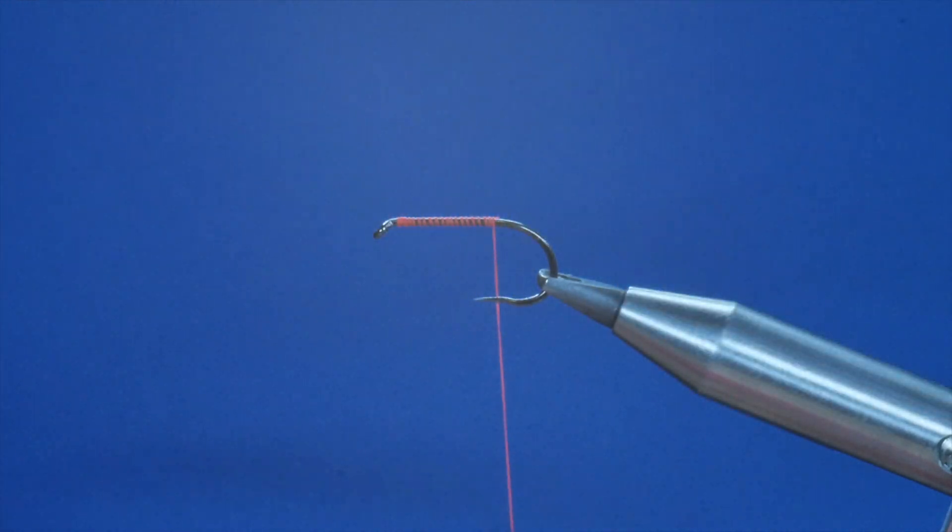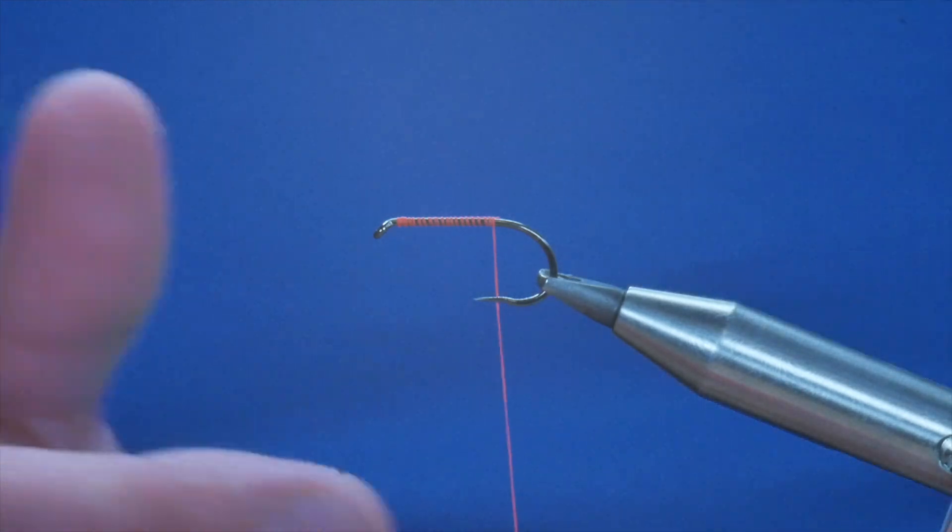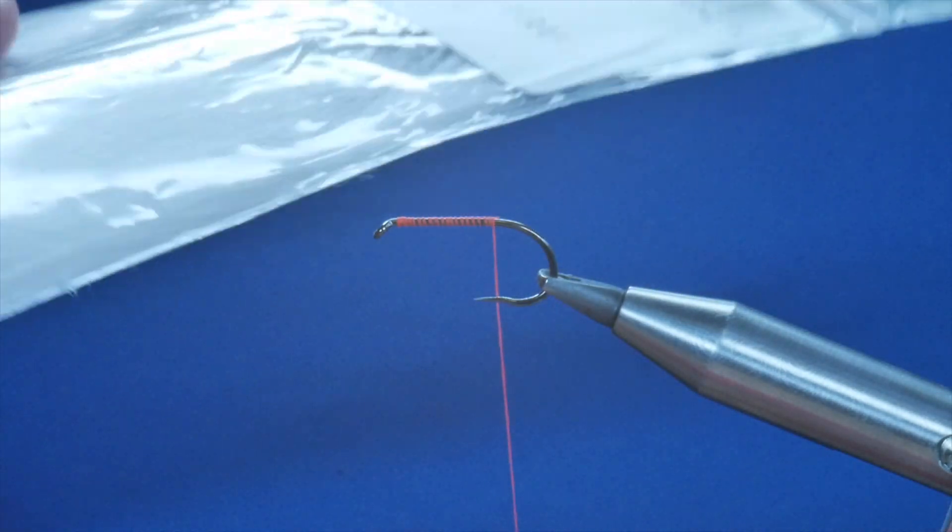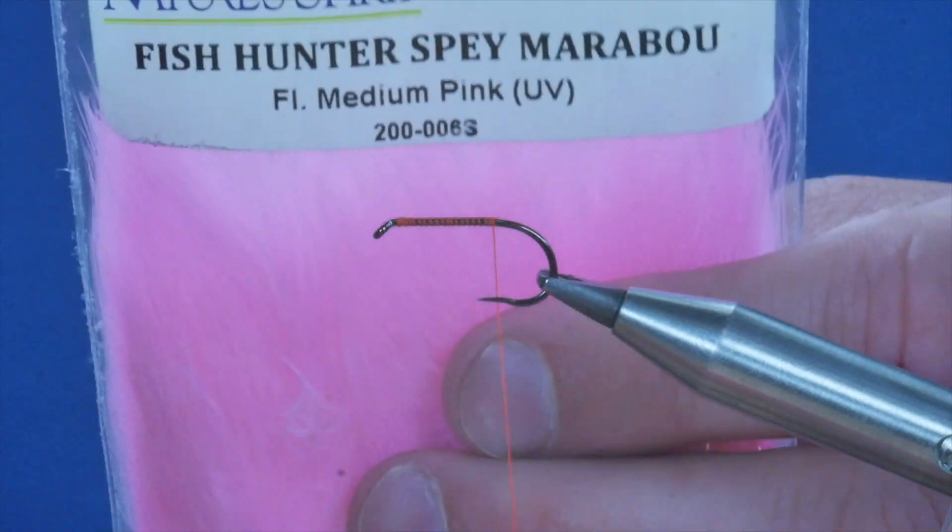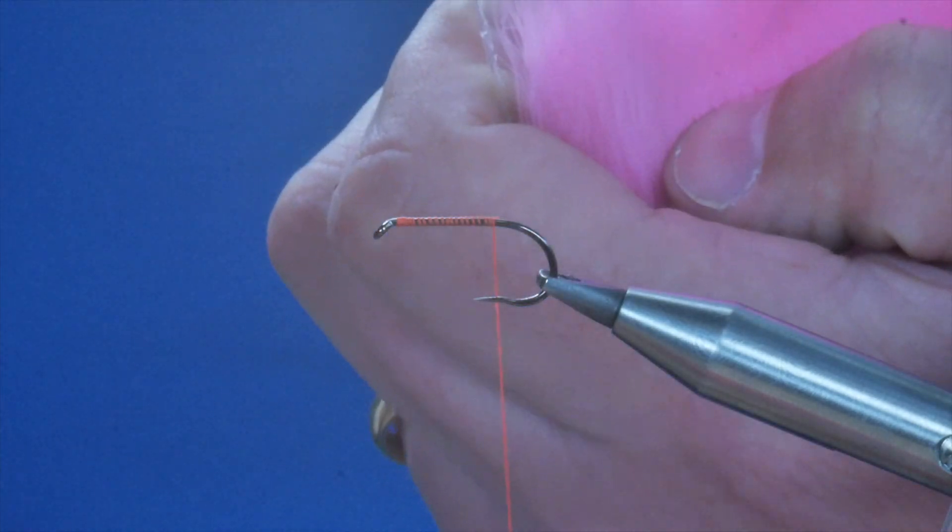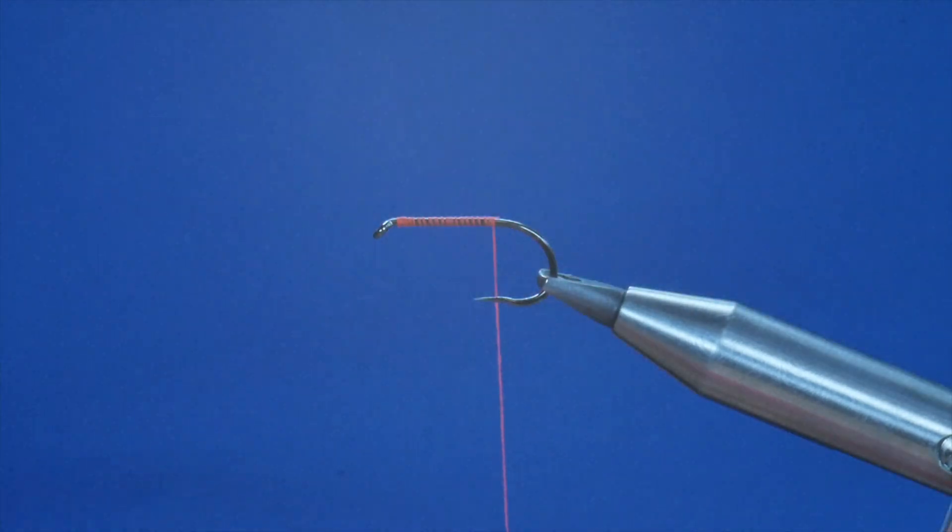Now the first thing I'm going to do is put my tail in. I'm going to use a combination of two marabous. Some people just use the baby pink, some people just use white, but I'm going to use the fluorescent white fish hunter spey marabou combined with the pink, medium pink. They're both UV marabous so they'll show up really well in clear water.